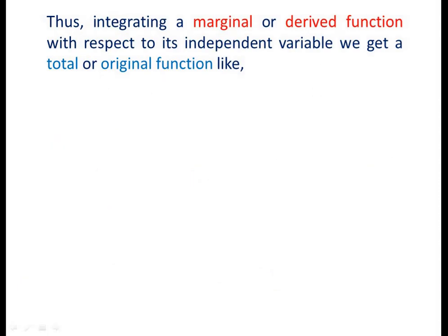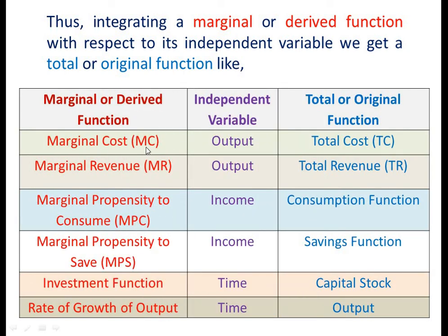Thus, integrating a marginal or derived function with respect to its independent variable, we get a total or original function. For example: integrating the marginal cost function with respect to output gives the total cost function; integrating the marginal revenue function with respect to output gives the total revenue function; integrating marginal propensity to consume (MPC) with respect to income gives the consumption function; integrating marginal propensity to save (MPS) with respect to income gives the saving function; integrating investment function with respect to time gives capital stock; and integrating the rate of growth of output with respect to time gives output. These are the different applications of integration.